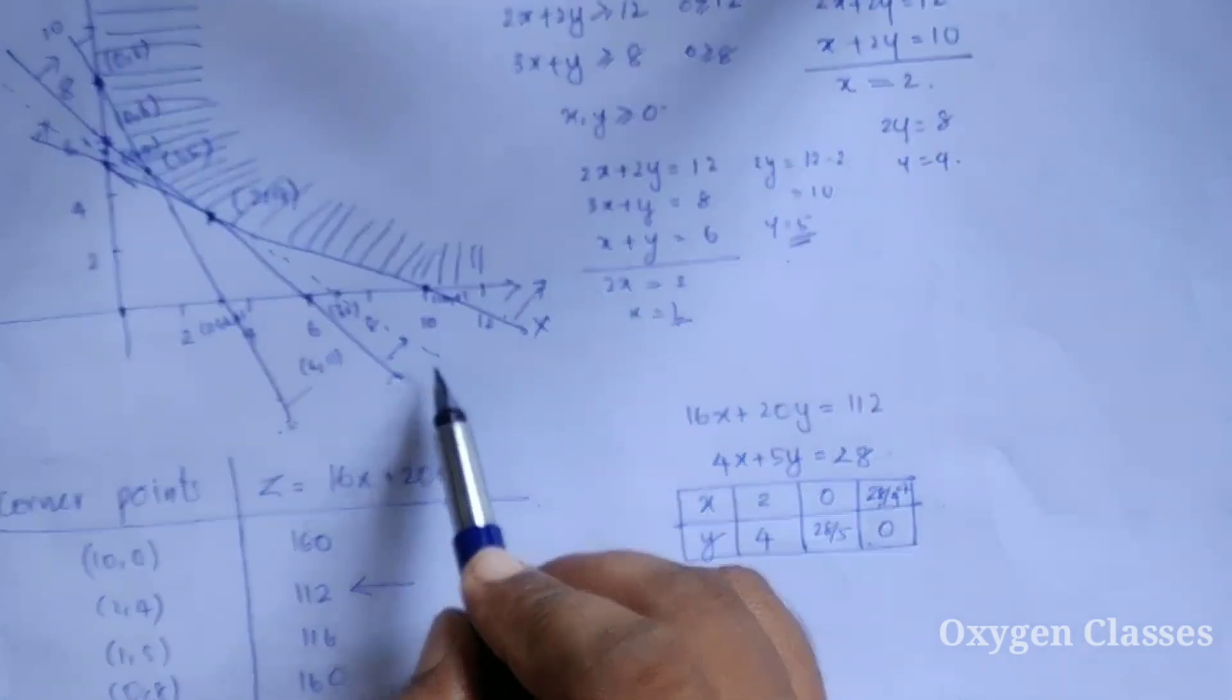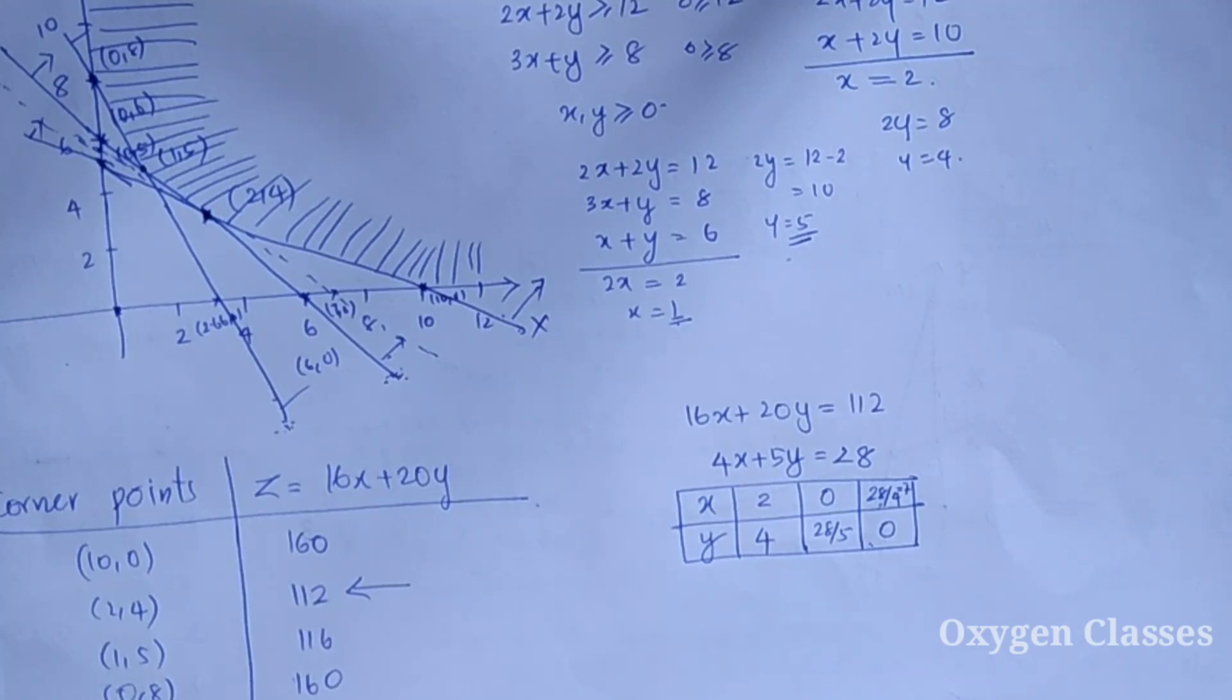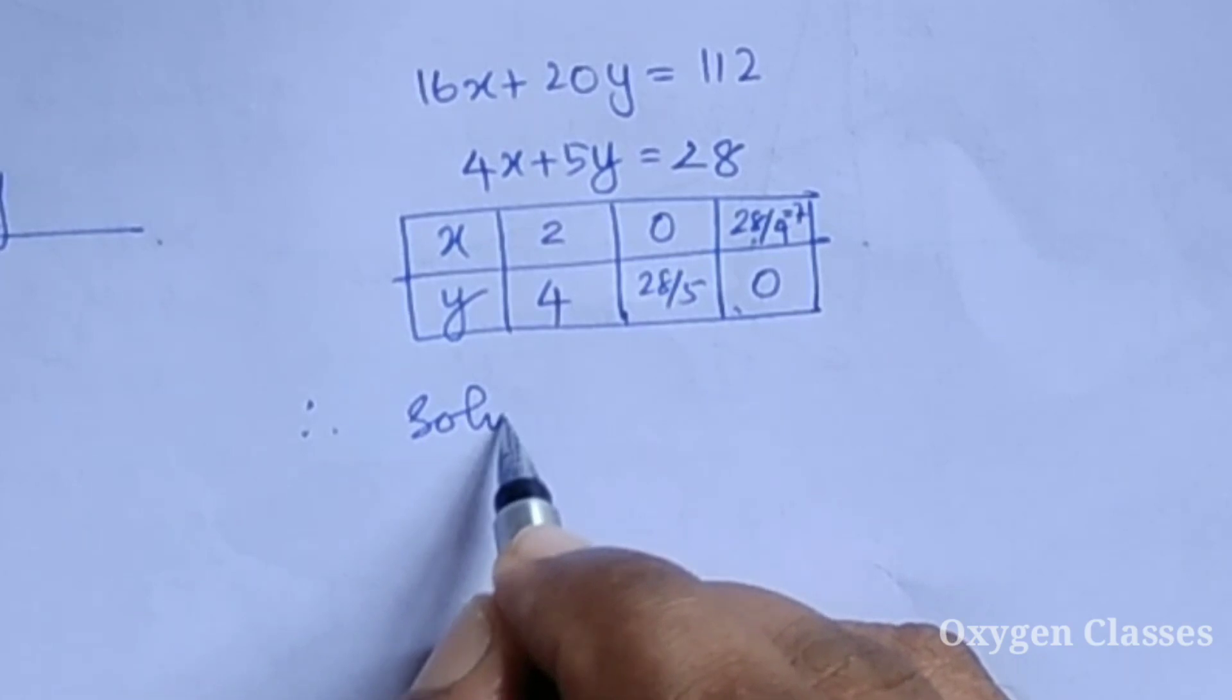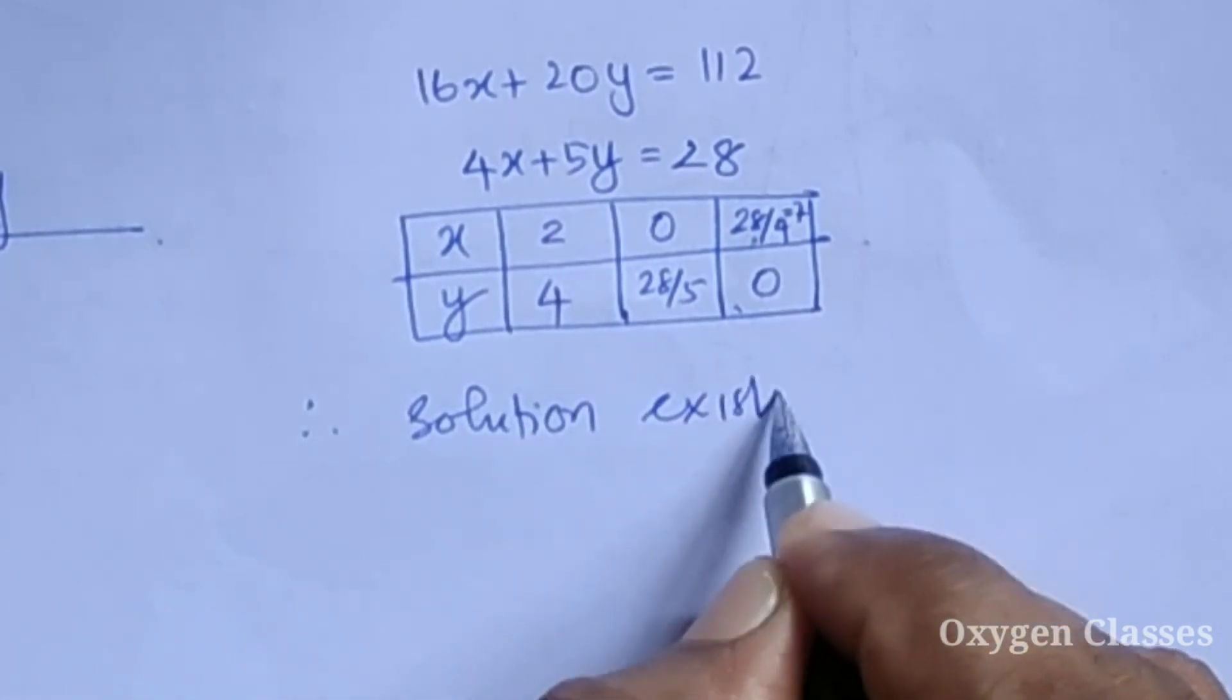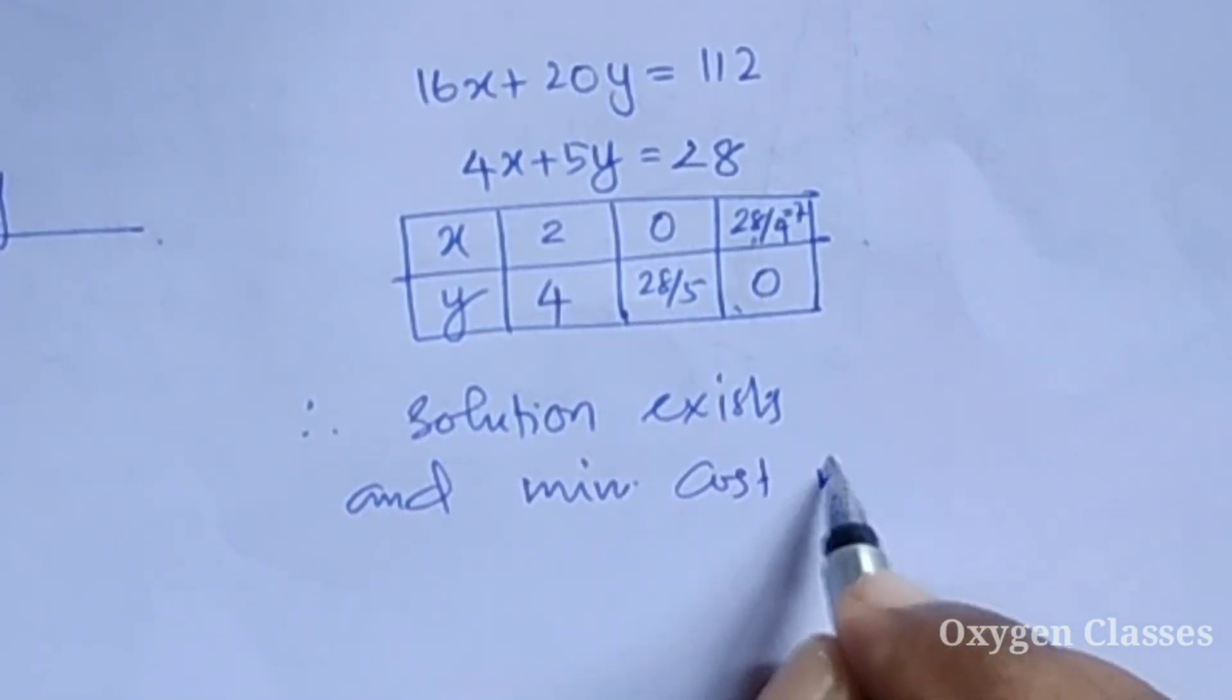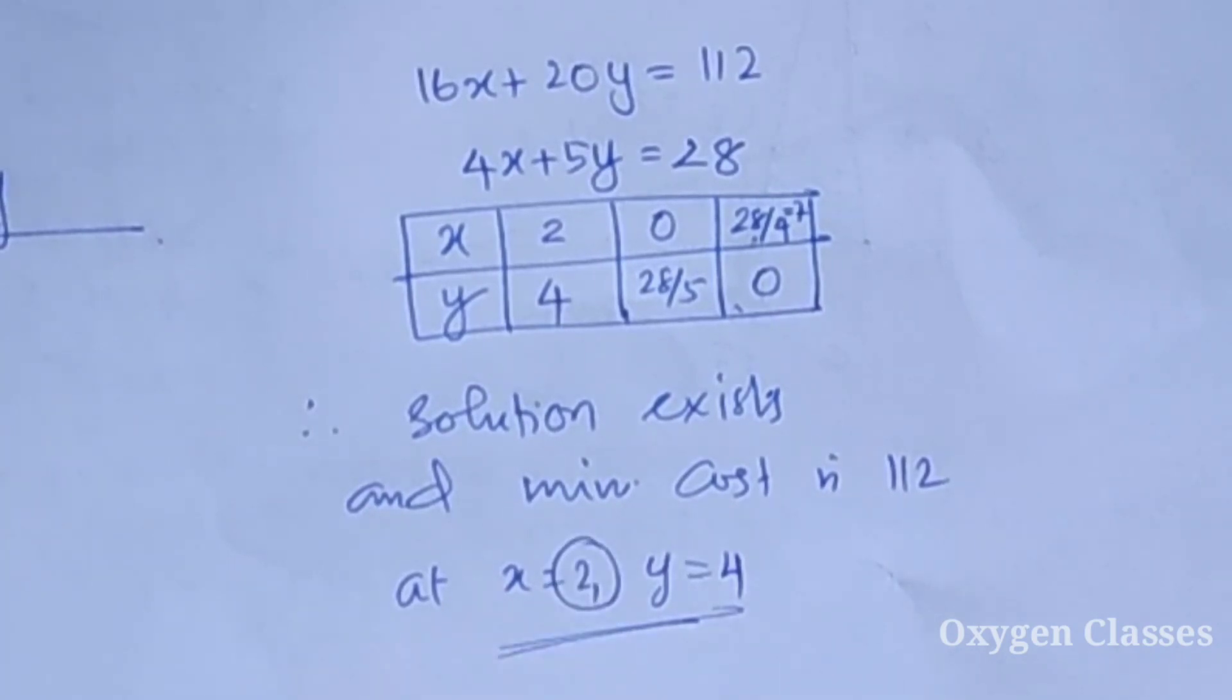The dotted line shows that (2, 4) is the only common point in the feasible region at this minimum cost. Therefore, the solution exists and the minimum cost is 112 at X equal to 2 and Y equal to 4. We need to purchase 2 kilograms of food X and 4 kilograms of food Y to meet the minimum requirements.